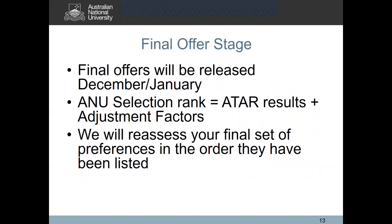Once you have received and accepted a conditional offer, you can continue to focus on your year 12. Once you've completed year 12 and received your ATAR scores, final offers will be released in December or January depending on when ATAR scores become available. At the final offer stage we will develop your ANU selection rank again using your ATAR results and any adjustment factors you were eligible for. Based on this selection rank, if you become eligible for one of your higher preferences, a full offer will be made to that program. If you're not eligible for a higher preference but meet the conditions of your original offer, you will be made a full offer to that program. Note that admission to ANU programs is on a competitive basis, so meeting the minimum entrance requirement does not guarantee an offer to one of your higher preferences.